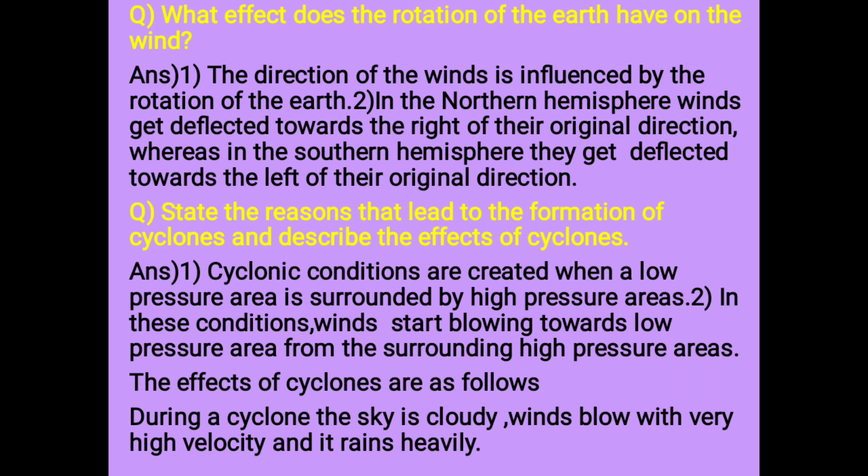Question: State the reasons that led to the formation of cyclonic winds and cyclones, and describe the effects of cyclones. Answer: 1. Cyclonic conditions are created when a low pressure area is surrounded by high pressure areas. 2. In these conditions, winds start blowing towards low pressure areas from the surrounding high pressure areas. Effects of cyclones: During a cyclone, the sky is cloudy, winds blow with a very high velocity and it rains heavily.